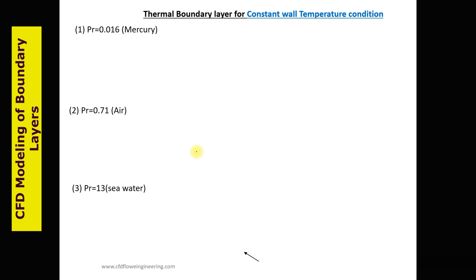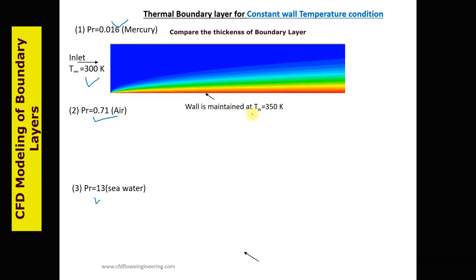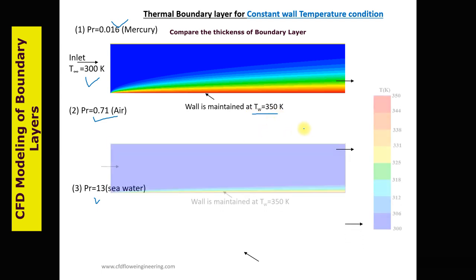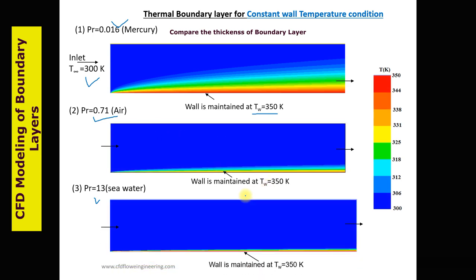We can study the effect of different fluids — that means the effect of low Prandtl number fluid like mercury, the effect of a medium Prandtl number, and the effect of high Prandtl number fluid like seawater. Inlet temperature is fixed and wall temperature is fixed. The highest thickness of the thermal boundary layer is observed for mercury, and the lowest thickness is observed for seawater. That means heat transfer by seawater is highest compared to mercury or air. In short, water is the best coolant compared to any other working fluid, and can remove more heat quickly compared to air and mercury.